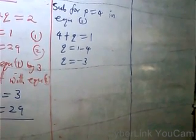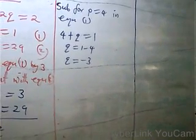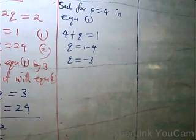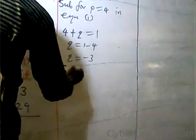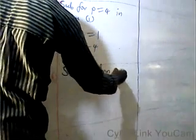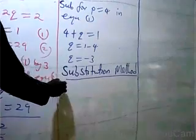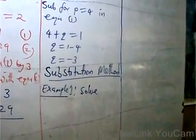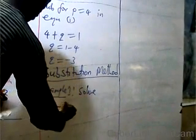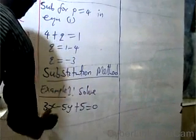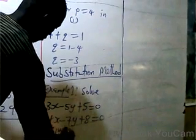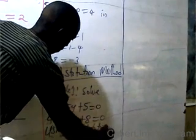Now, what we have done so far with the three examples using elimination method — we want to look at the other method, that is substitution method. I want to use substitution method to solve the same example 1: 3x minus 5y plus 5 equals 0, and 4x minus 7y plus 8 equals 0, using substitution method.